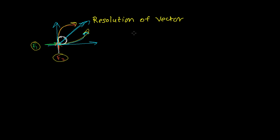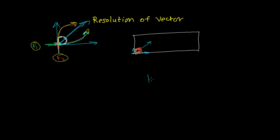You can do the same experiment at home. Take a rectangular table and put a box or some object at the corner. Try applying a force on one side and a force on another side. You'll see the object moves along the middle. Or simply take a book — with one finger hit towards one side and with another finger hit towards the other side at the same time. The book will move along the diagonal, not towards either individual direction.